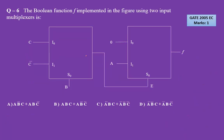Question number 6 was asked for 1 mark in GATE 2005. The function at the intermediate point is C·B bar + C bar·B. Then applying it: 0·E bar + A·E gives A·E, meaning A·(C·B bar + C bar·B). This expands to A·B bar·C + A·B·C bar. Option A is correct.